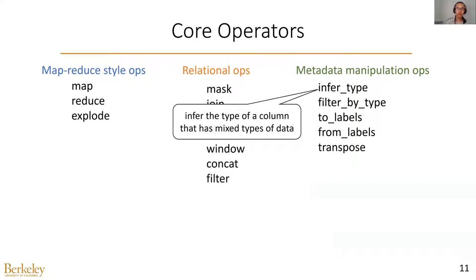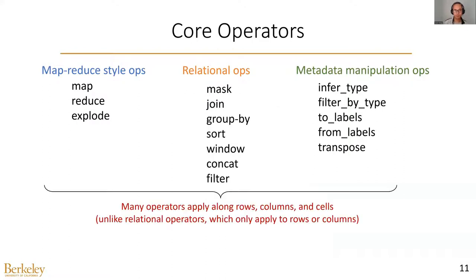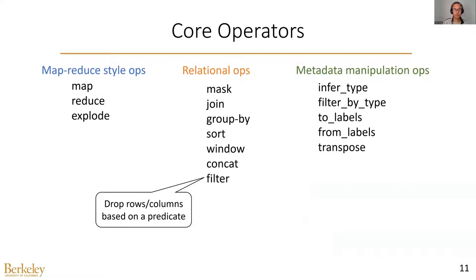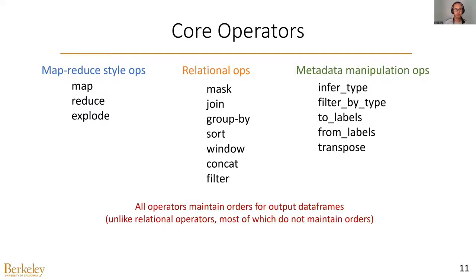We have three types of core operators: MapReduceStyle, relational, and metadata-related. For example, the InferType operator will infer the type of a column that has mixed types of data. One unique property of these operators is that many of them apply along rows, columns, and cells, which is different from relational operators that only apply to rows or columns. For example, this filter operator will drop rows or columns based on a predicate.